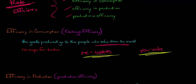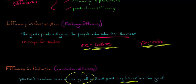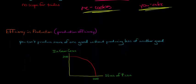Efficiency in production has to do with when you're at an allocation that is efficient in production — you cannot produce any more of one good without producing less of another good. Let's say we had an economy with ice cream cones and slices of pizza. If we completely focused on producing ice cream cones, we'd produce 200 ice cream cones and zero slices of pizza. If we just focused on slices of pizza, we'd have 100 slices of pizza and zero ice cream cones. This is called the production possibilities frontier — that curve — and any point along this curve is going to be efficient in production.